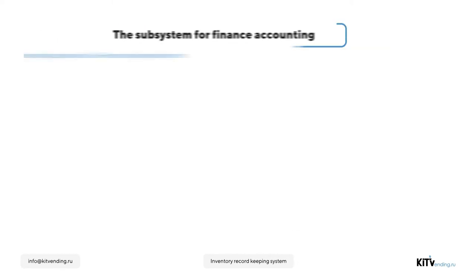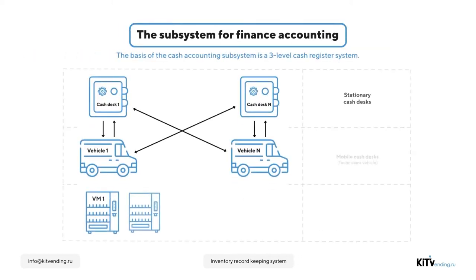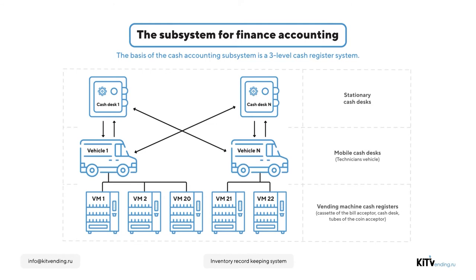The subsystem for funds accounting is based on a three-tier cash desk structure. The first level is a stationary cash desk, which stores working assets. The second level is the mobile cash desk — specifically, the technician's vehicle.